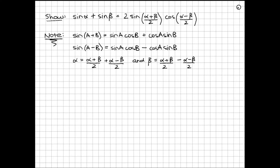In this video, I'm going to show that the sine of alpha plus the sine of beta is equal to 2 times the sine of alpha plus beta on 2 times the cosine of alpha minus beta on 2. We're going to do this making note of two of our compound angle formulas — the formula for sine of A plus B and the formula for sine of A minus B — and also a rearranging of alpha and beta, with alpha equal to (α+β)/2 plus (α−β)/2 and beta equal to (α+β)/2 minus (α−β)/2. These items come from a prior video where we worked through a very similar question.